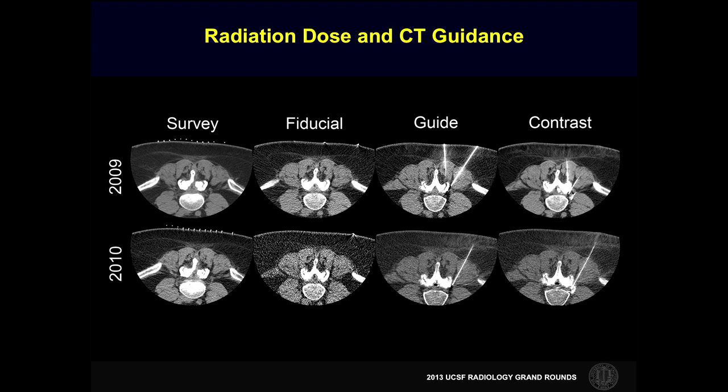This is showing different phases of a CT-guided injection. Two needles are being inserted — one in the facet joint, one for a nerve block. A survey phase is done to map out the lay of the land and identify an appropriate trajectory for getting the needle in the right spot. A fiducial phase is done to mark the skin and confirm the path. In the guide phase, the dose can be reduced significantly — all you need is to see the needle tip. In the final phase, the dose may be increased slightly to see where the medication was delivered.